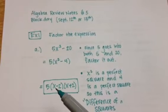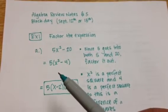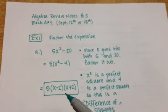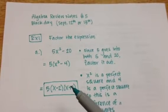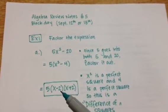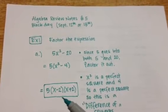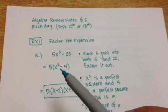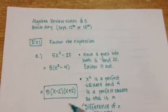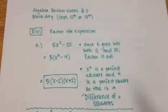Now, the reason this works is if I were to FOIL, x times x gives me the x squared. I get a minus 2x and a plus 2x, and then negative 2 times 2 gives me negative 4. The minus 2x and the plus 2x cancel out, which is why there's no x term in the middle here. And this would be my final factored answer, so that's a difference of squares.